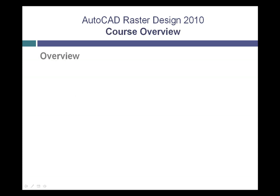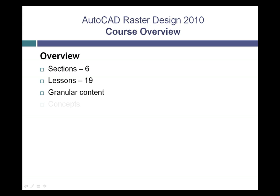The AutoCAD Raster Design class consists of six separate sections covering all of the essential features of AutoCAD Raster Design 2010. This includes a grand total of 19 separate lessons. These lessons are very specific and each one focuses on a single topic within the program. Some of these may be conceptual lessons — for example, what is a raster image or how do I work with a histogram? — and others are hands-on demonstrations of these features within the software itself. Datasets have been provided for each of these lessons, so you can go ahead and replicate these at your leisure.